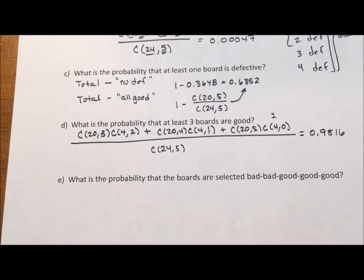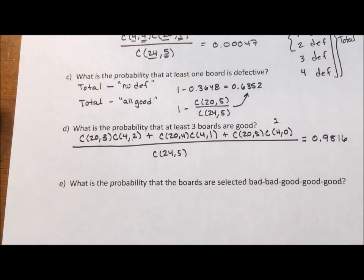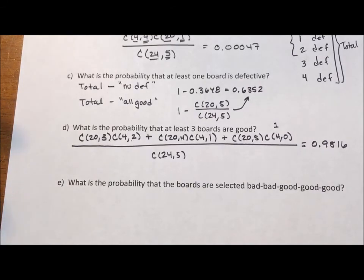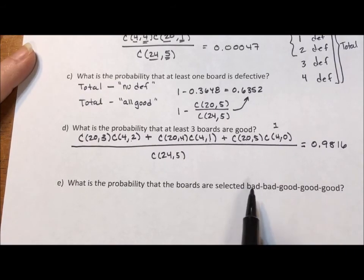And the last one is, what is the probability that the boards are selected bad, bad, good, good, good. So this is the one where all of our other examples, order didn't matter. When you picked the board, they were just there in front of you. It didn't matter the order in which you picked them. Here we have a very set order. 1, 2, 3, 4, 5.